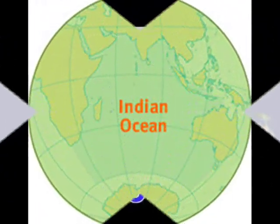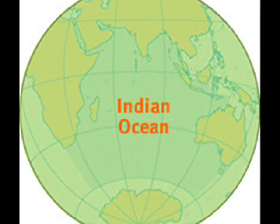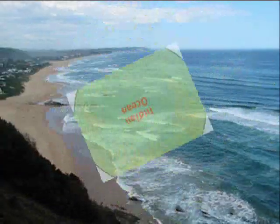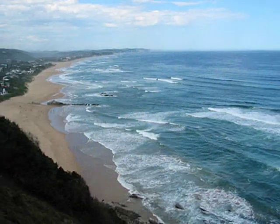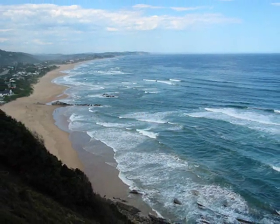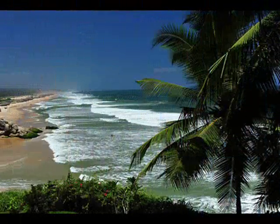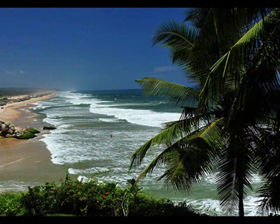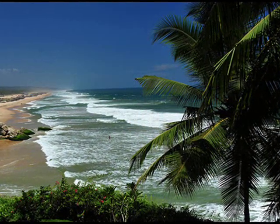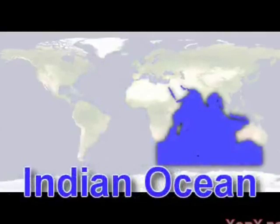The third largest ocean in the world is the Indian Ocean. The Indian Ocean is located between Africa, Asia, and Australia. The Indian Ocean takes up only 20% of the area of oceans on our planet. This is also the only ocean named after a country. The blue section of the map is the Indian Ocean.